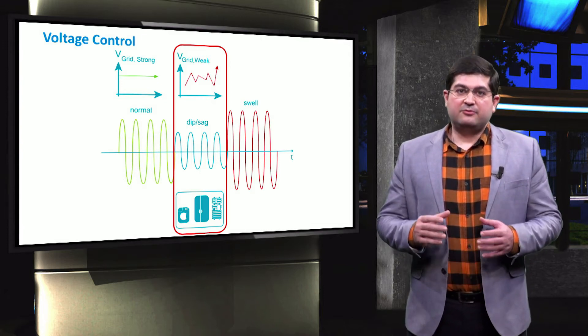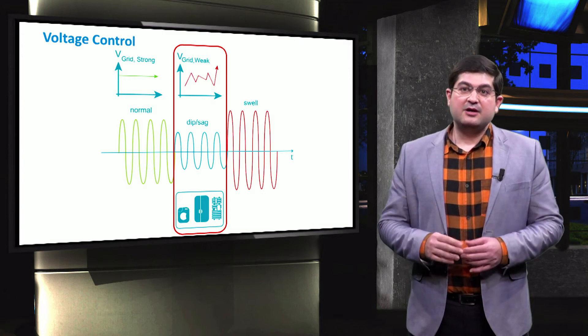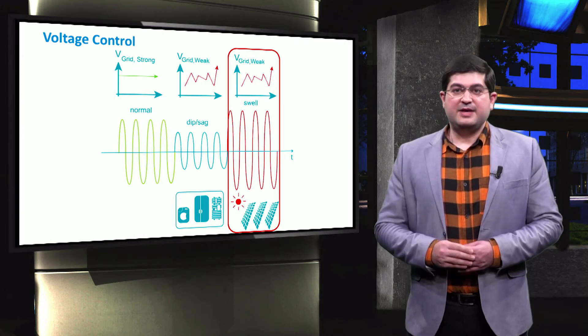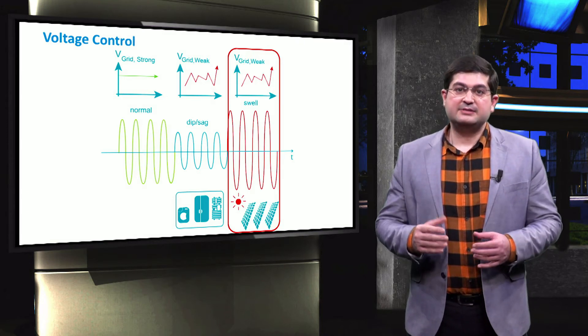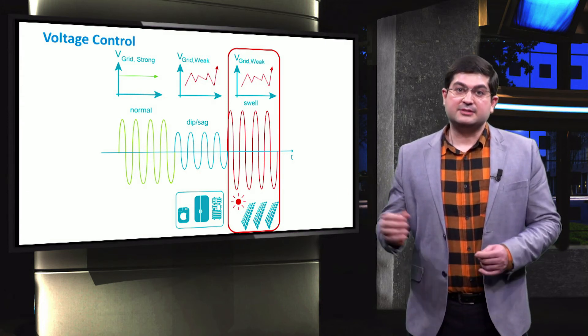For instance, voltage sag problems may occur particularly when the level of loads is high. If the grid is weak, also high penetration rates of PV units or other renewables can lead to unacceptable voltage swells.